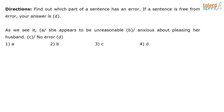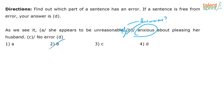Next: 'As we see it, she appears to be unreasonable, anxious about pleasing her husband.' The error is in part B. We need an adverb to modify how anxious she was — so it should be 'unreasonably' not 'unreasonable'. We need an adverb modifying the adjective 'anxious', not another adjective.